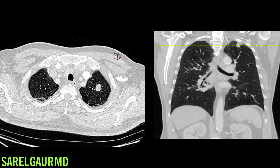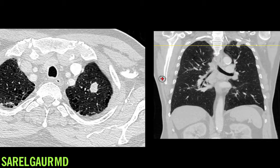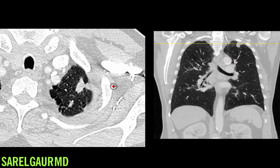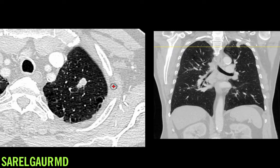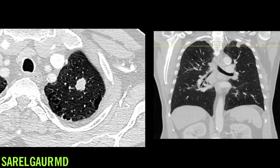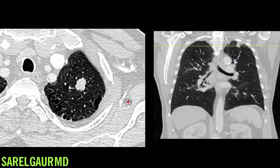First, I analyze the nodule to look for benign features. Is there calcification of the nodule that could suggest a granuloma, which is a benign process? Or is there internal fat in the nodule, which would indicate a hamartoma, a benign lesion? I'm also going to look at prior CTs to see if this nodule has been present for greater than two years, because if so, there's a high likelihood that it's benign.